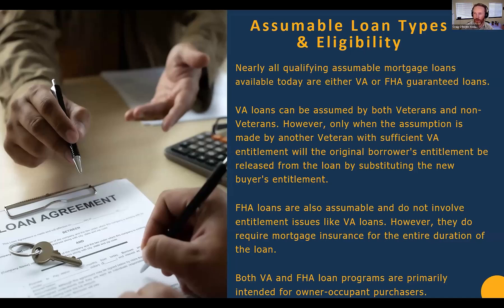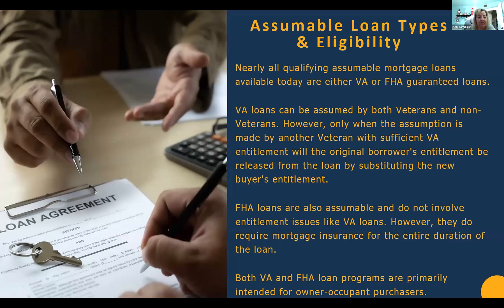Think of entitlement as an insurance policy. On FHA loans, they charge the upfront mortgage insurance premium — that's insurance for the lender against default. On a VA loan, entitlement is basically that insurance piece. VA will guarantee 25% of the loan amount. That guarantee, or entitlement, is the amount we look at when a buyer is doing a substitution of entitlement — we confirm upfront that they've got sufficient entitlement to do so.